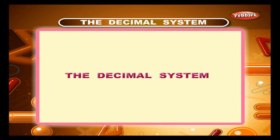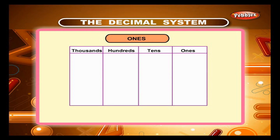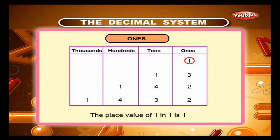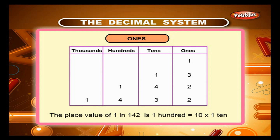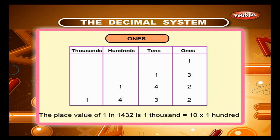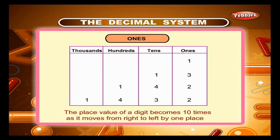Chapter 7: The Decimal System — Ones. Look at the place value chart for the numerals 1432, 142, 13 and 1. The place value of 1 in 1 is 1. The place value of 1 in 13 is 10, which is equal to 10 into 1. The place value of 1 in 142 is 100, which is equal to 10 into 10. The place value of 1 in 1432 is 1000, which is equal to 10 into 100. Thus, the place value of a digit becomes 10 times as it moves from right to left by one place.